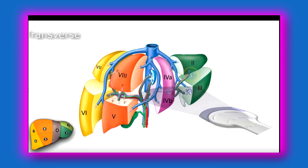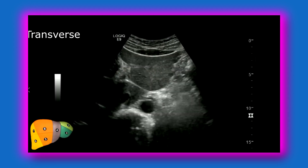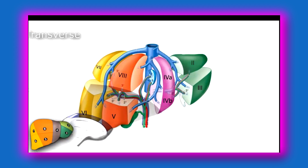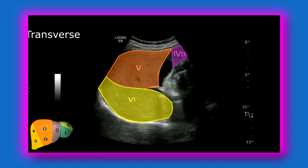Now we're going to approach from inferior to superior. There you can see the pancreas, angling upwards. Here we have segment 3, caudate lobe, segment 5, and 4B — we're around this region right here. Now scanning on the right lobe of the liver in transverse, we've got your gallbladder, segment 4B, 5, and 6 — right here, 4B, 5, and 6.